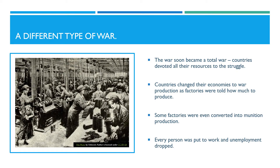A different type of war. The war soon became a total war. Countries devoted all their resources to the struggle. Countries changed their economies to war production as factories were told how much to produce. Some factories were even converted into munitions production — creating bullets, weapons, and things like that for the war. Every person was put to work and unemployment dropped.